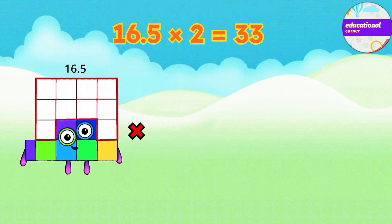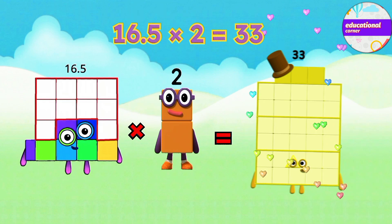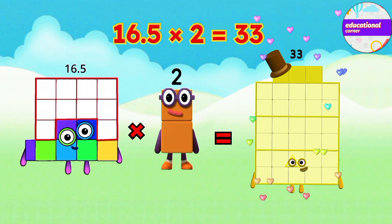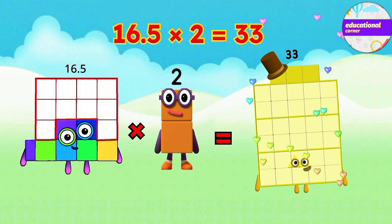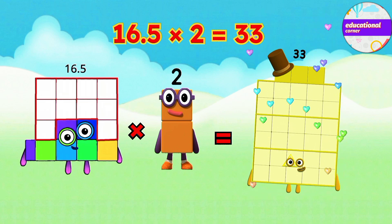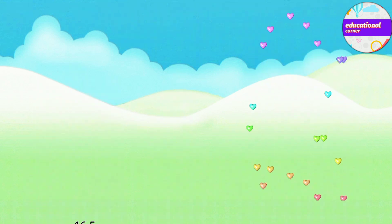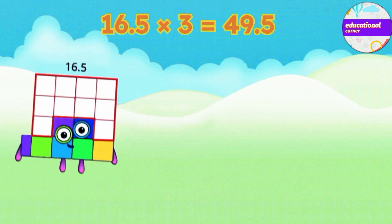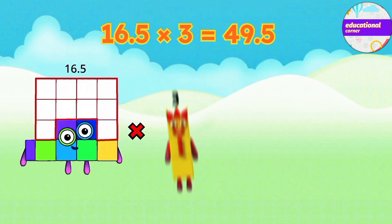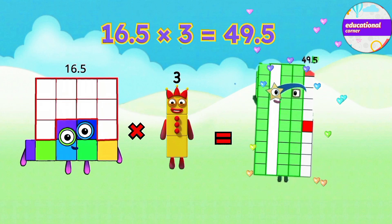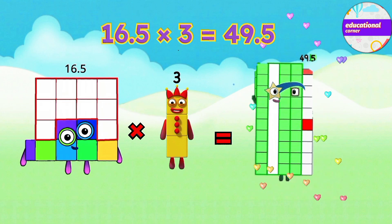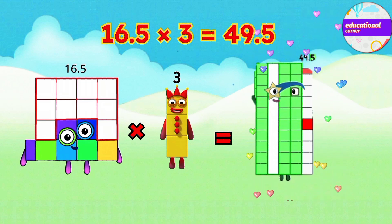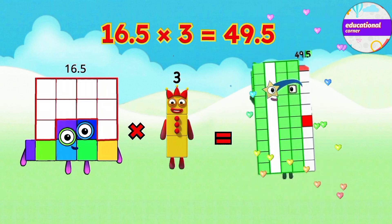16.5 multiplied by 2 equals 33. 16.5 multiplied by 3 equals 49.5.